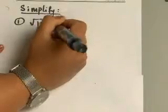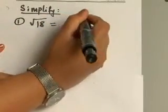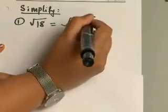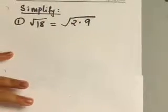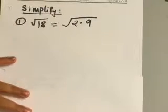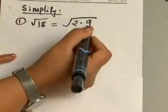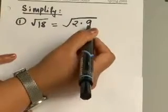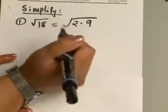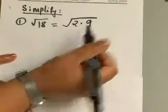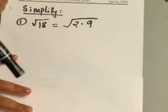First of all, go ahead and write square root of 18 in its factored form, which would be 2 times 9. Now, the reason we're using 2 times 9 is because 9 is a perfect square and I can bring the 9 outside of the radical sign. That's why we stick with 2 times 9 instead of 3 times 6.